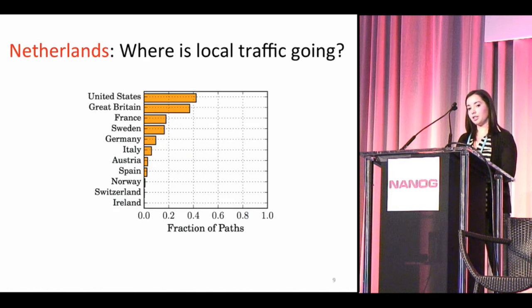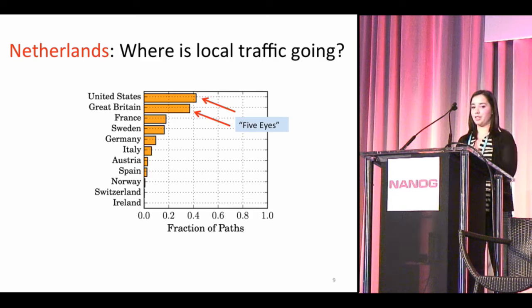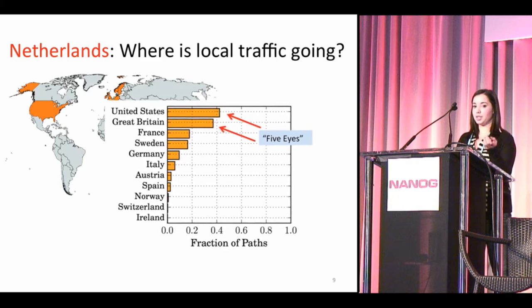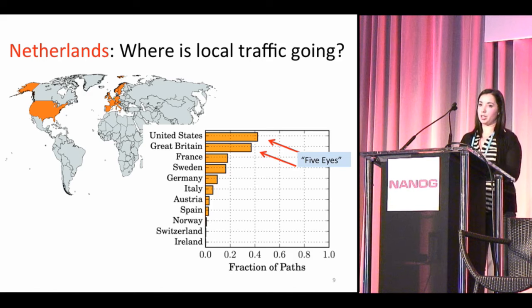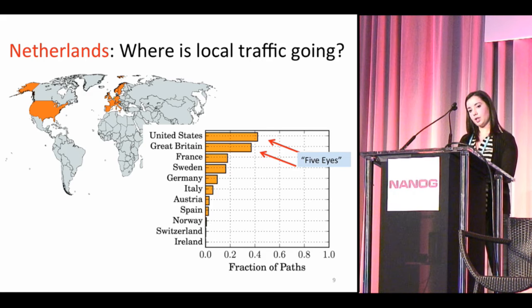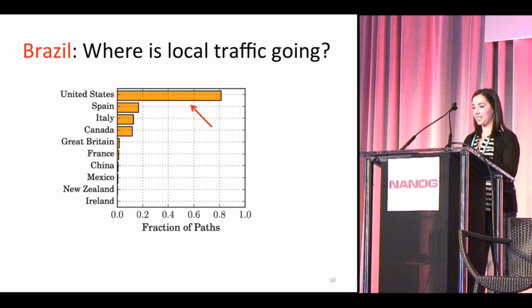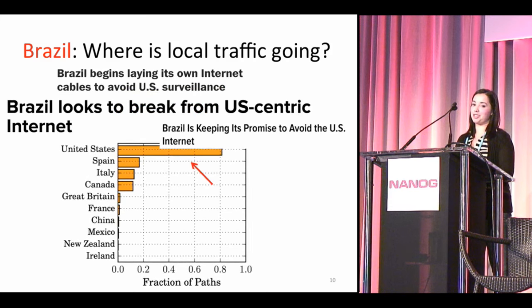Moving to our second question — does local traffic leave the country, and if so, where does it go? We found that despite both the Netherlands and Brazil having large IXPs, their local traffic often trombones to the United States. Looking more closely at the Netherlands, the two most common tromboning destinations are the United States and Great Britain — both members of the Five Eyes surveillance agreement. The rest of the countries that Netherlands traffic trombones to are geographically close, which makes more sense than tromboning to the United States.